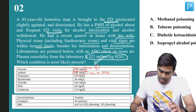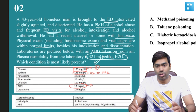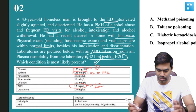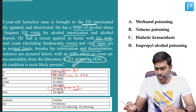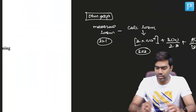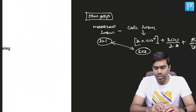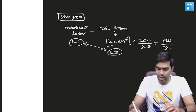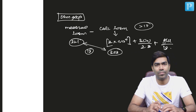The BUN here is 18, so 18 divided by 2.8 is around 6 to 7 — let's take 7. So 290 plus 6 is 296, plus 7 is 303. The calculated serum osmolality is 303, and there is a gross difference between the measured serum osmolality (321) and the calculated osmolality (303). The gap is definitely more than 10 — in this situation it's around 18 to 20.